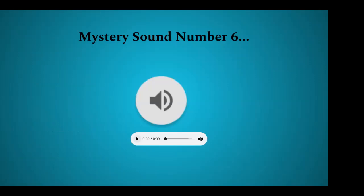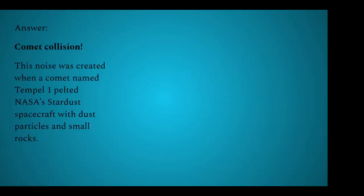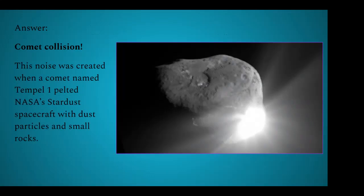Here's our sixth mystery sound. So there's a much shorter sound than the other ones. This one actually does not come from any kind of planet, it's a comet collision. This noise was created when a comet named Tempel 1 pelted NASA's Stardust spacecraft with dust particles and small rocks. So essentially, the spacecraft was hit by the tail of the comet.